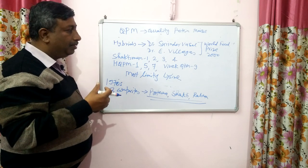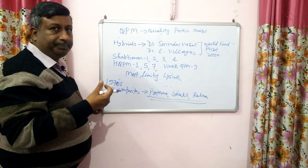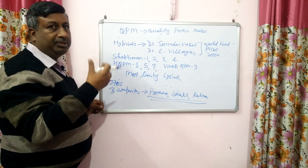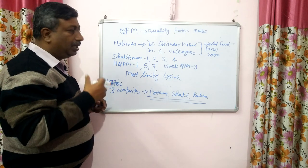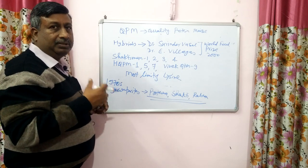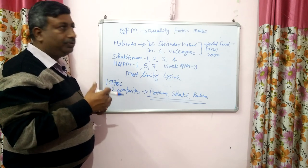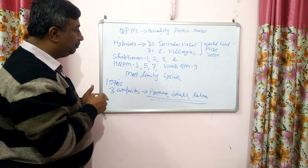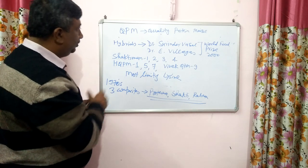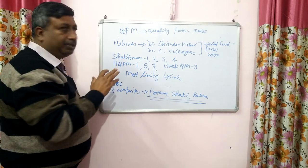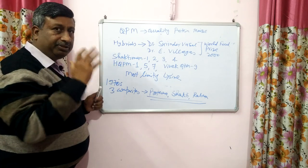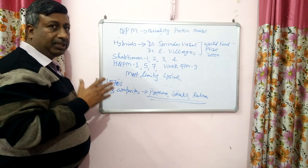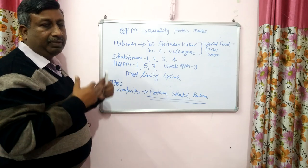The content in QPM is almost double. As mentioned, lysine is about 3.5 to 4% and tryptophan is about 0.7 to 0.8% in quality protein maize. The biological value is very high — almost double that of normal maize.